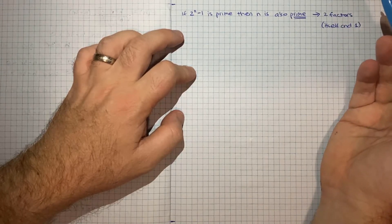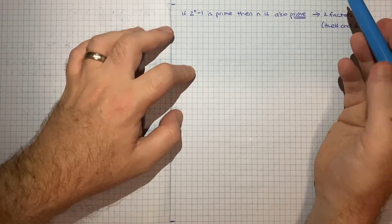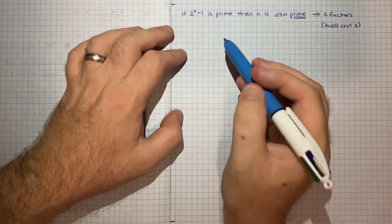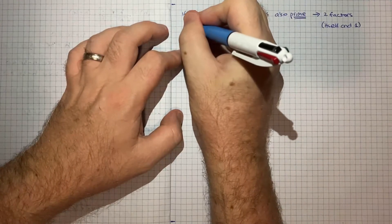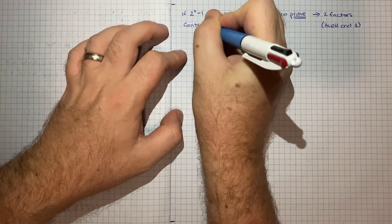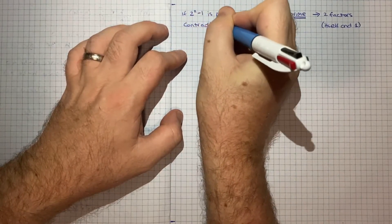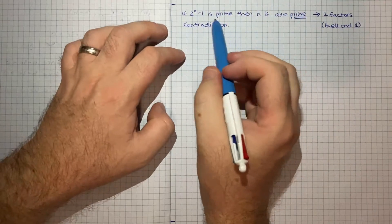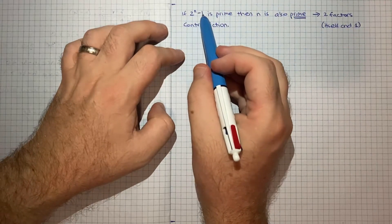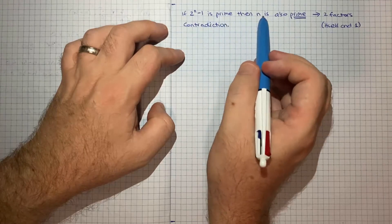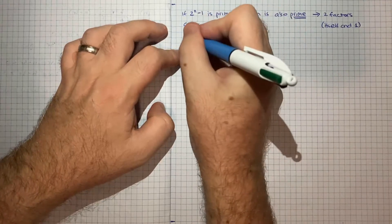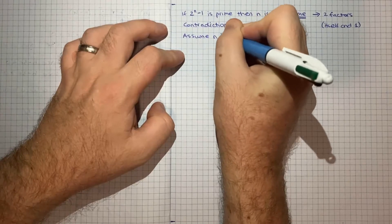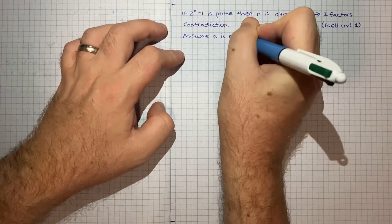For this proof I think an elegant way we can go about this is to use proof by contradiction. So what we'll do is say: if 2 to the n minus 1 is prime, let's assume that n is not prime, and see what we get.